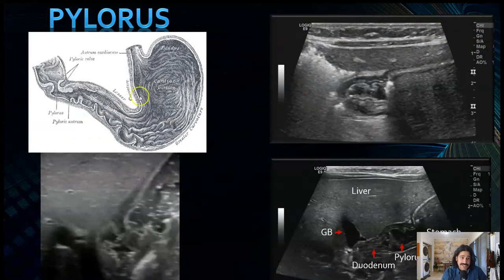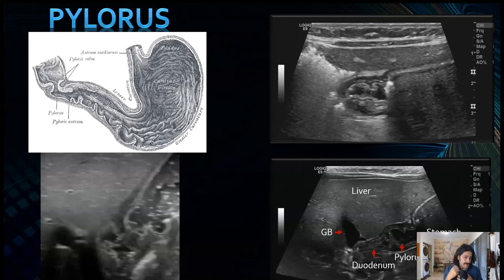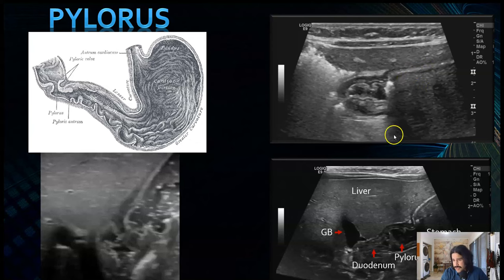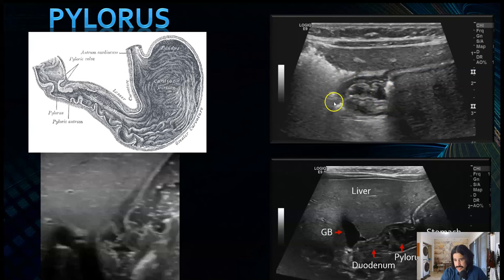The pylorus is the end of the stomach — you have the antrum, the pyloric antrum, and then the pylorus, which is a sphincter. So you have the esophageal sphincter and pyloric sphincter. It's a circular muscular ring that keeps stomach contents in long enough for digestive enzymes to start working, then propels food toward the first part of the duodenum. Here's the antrum — there's a lot of air, so you can see dirty shadowing. Then the pylorus, the pyloric antrum, the pyloric sphincter, and the first part of the duodenum. This is a normal pylorus with some liquid and air.